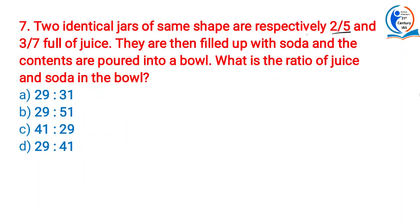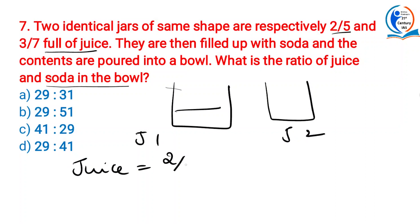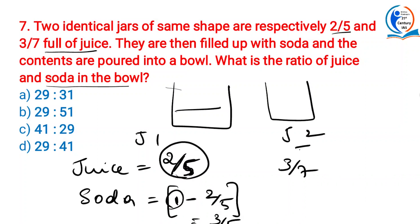Two identical jars of the same shape are respectively 2/5 and 3/7 full of juice. They are filled up with soda and the contents are poured into a bowl. What is the ratio of juice to soda in the bowl? Juice in jar 1 is 2/5 and in jar 2 is 3/7. Soda in jar 1 is 1 − 2/5 = 3/5. The full quantity in fraction terms is 1, since 100% equals 1.